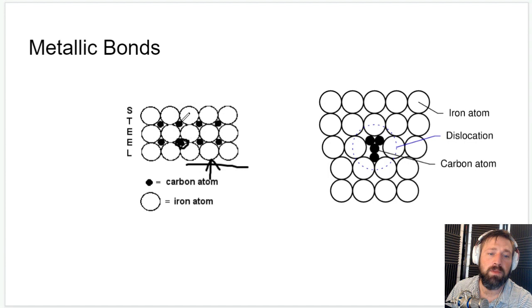It would force these atoms so far apart that those forces that are already kind of weak are going to just snap and break. So the more carbon atoms you have in interstitial spaces, the more brittle a metal is going to be.